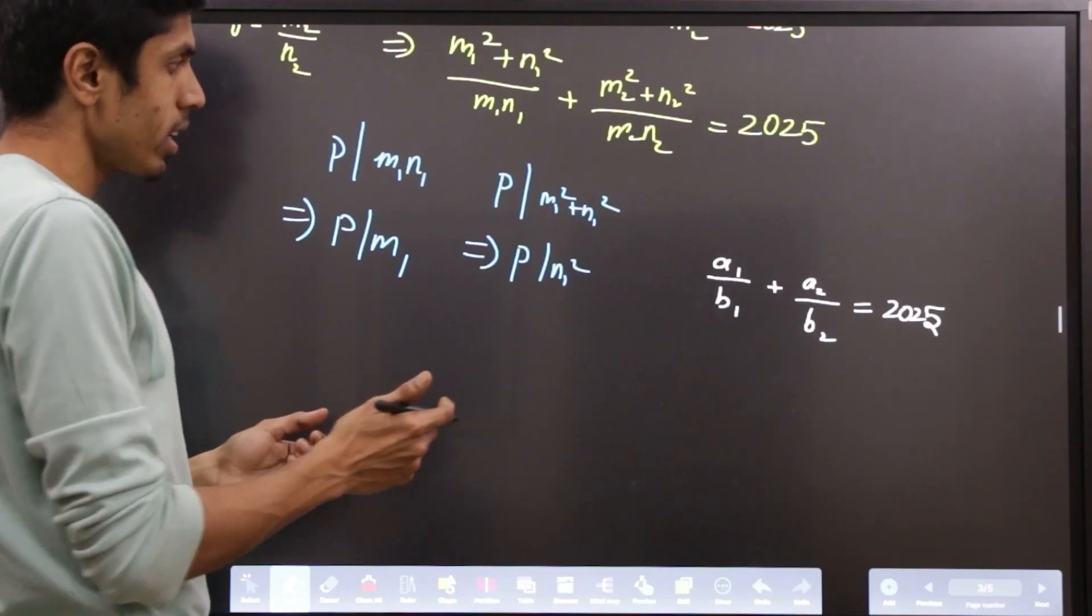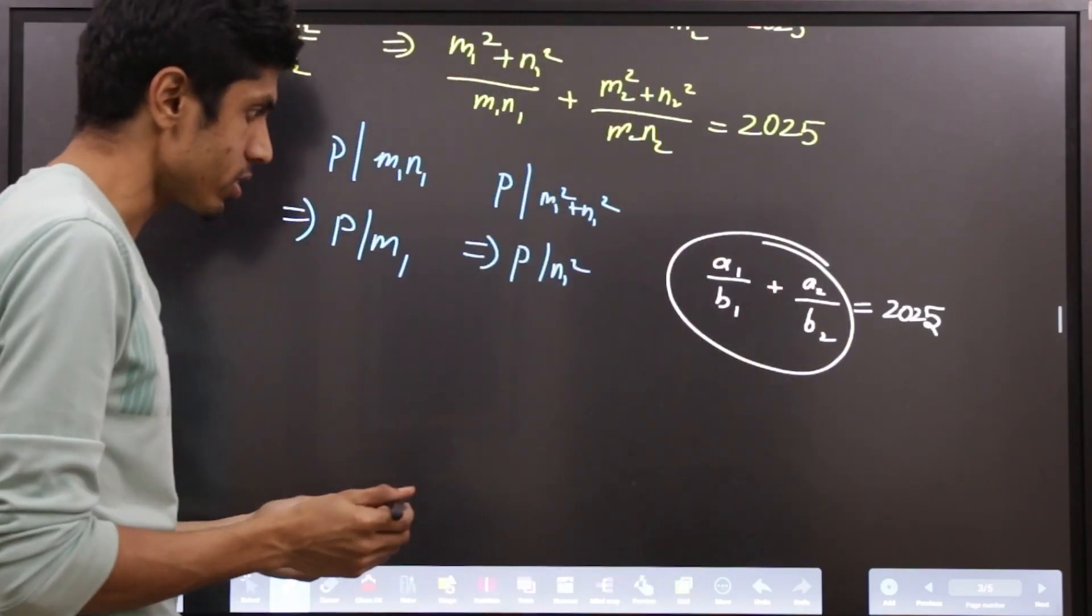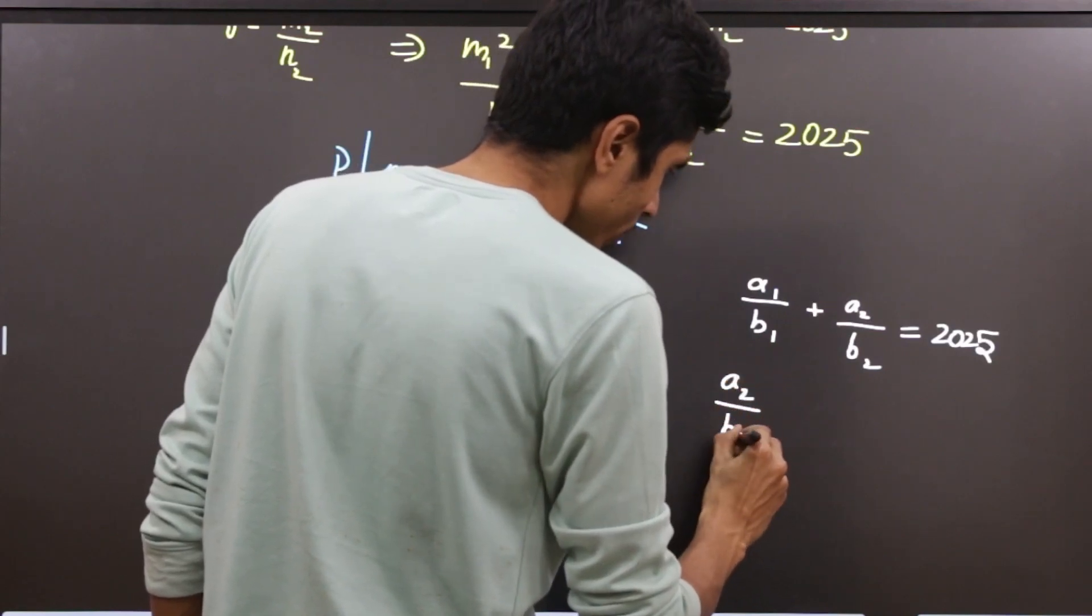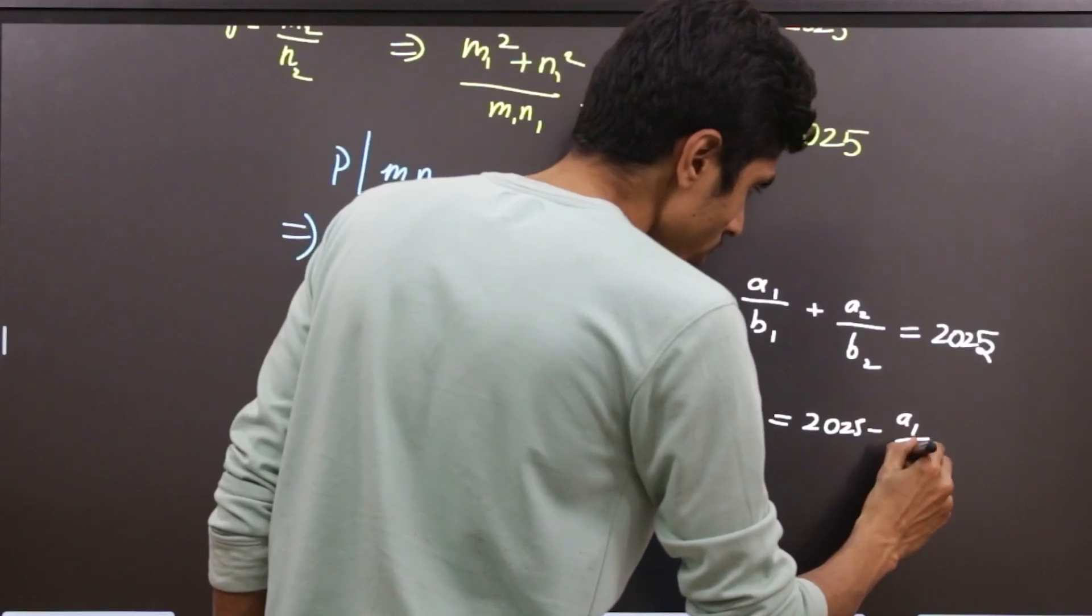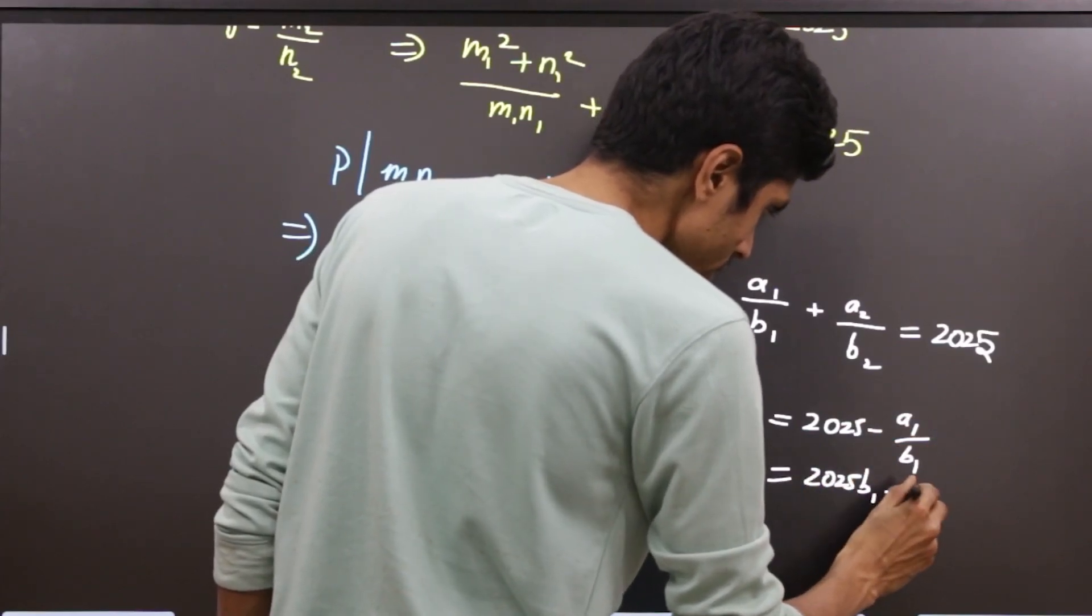If they are not equal, then you will have some fraction in your LHS. For example, if you consider a2/b2, that would equal 2025 - a1/b1, which equals (2025b1 - a1)/b1.